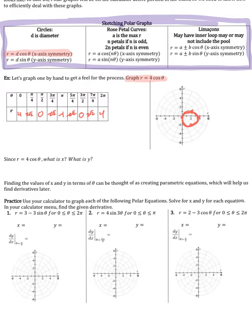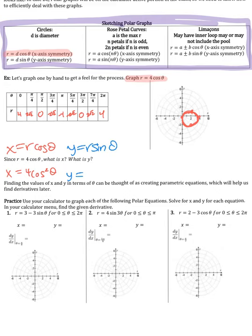Now let's convert r = 4cosθ to rectangular coordinates. Recall that x = r·cosθ and y = r·sinθ. So here x = 4cosθ·cosθ = 4cos²θ, and y = 4cosθ·sinθ. By converting to rectangular we've essentially created a parametric equation, which will help us find derivatives — which is what we do next.